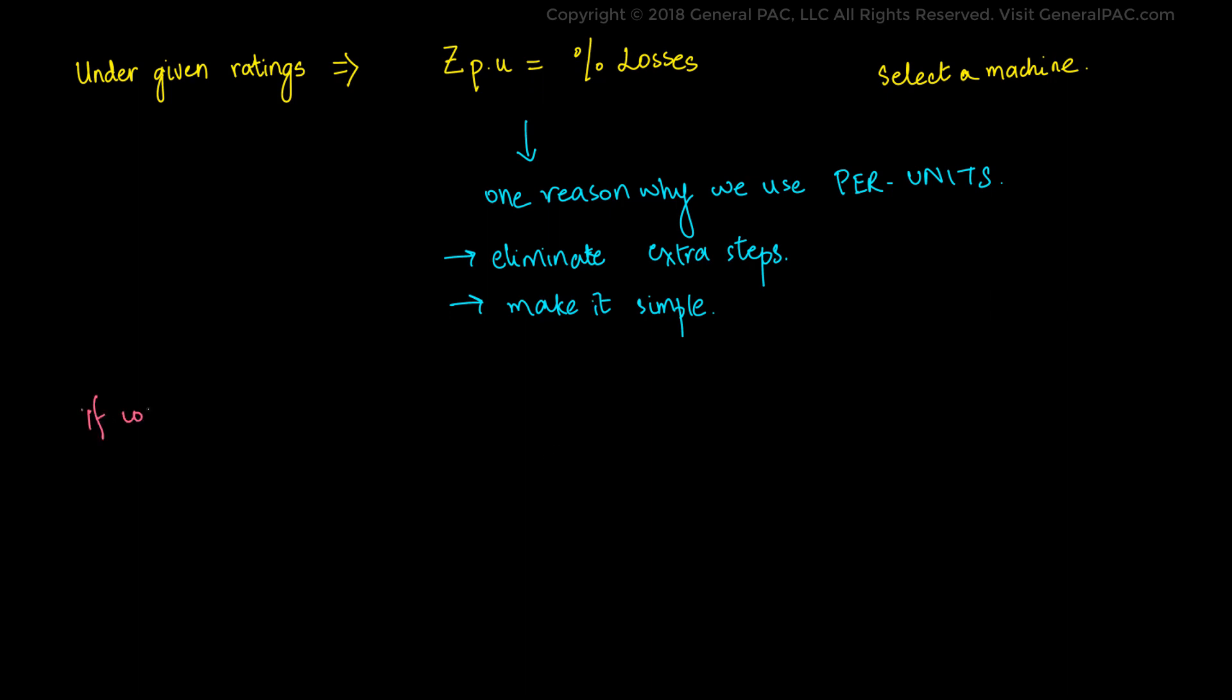This concludes that if we want to compare different electrical components, we could simply calculate the per unit impedances and find out the desirable component for our power systems. Manufacturers usually simplify the impedance of a component in percents or per units on the base of the nameplate rating.